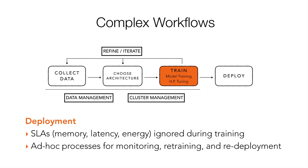This process takes weeks, and it's manual. Then I've got to refine and iterate. It's never the case that the first model is statistically sufficient — if it were, I probably could have solved it with simpler methods. I might go back and collect new or different data, or choose a different architecture. Underneath all of this, we have data management issues and cluster management issues. Big datasets are the fuel for these models — multi-terabyte datasets, sometimes even bigger. We also have the problem of tracking what models we've tried, on what software versions — experimental metadata we're often not capturing.